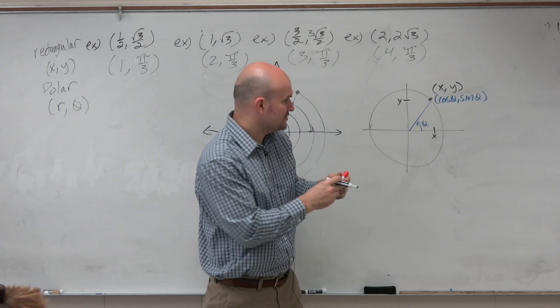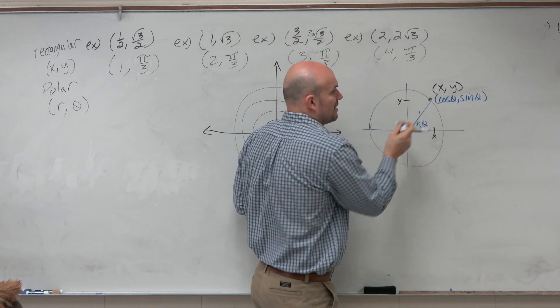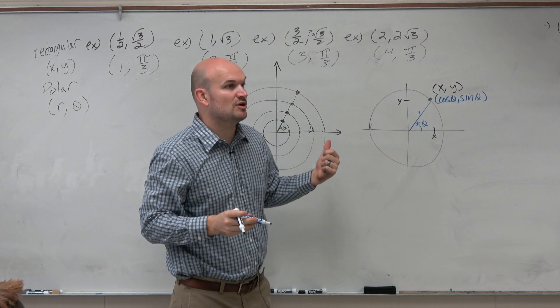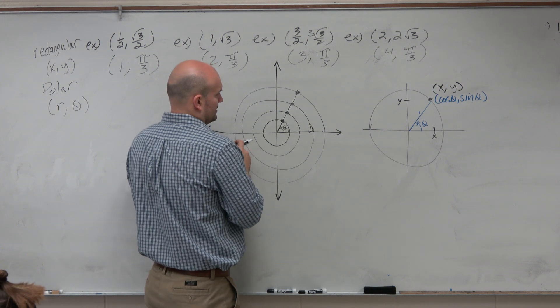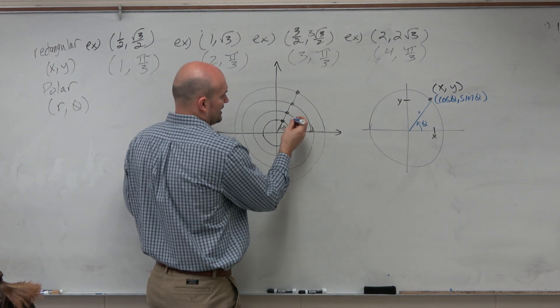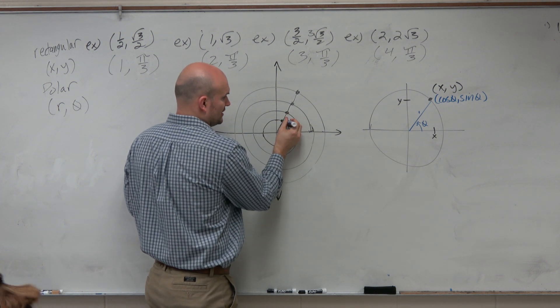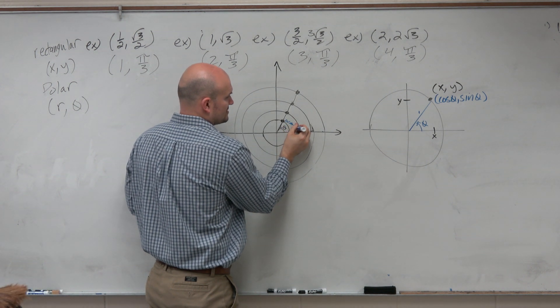So instead of this having a magnitude of 1, if I wanted a magnitude of 2, I would multiply it by 2. Once you guys agree, this point on the unit circle is (cos θ, sin θ).